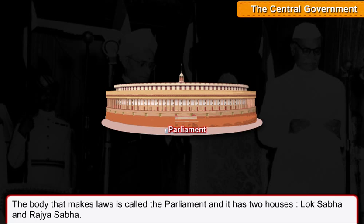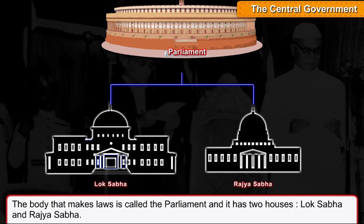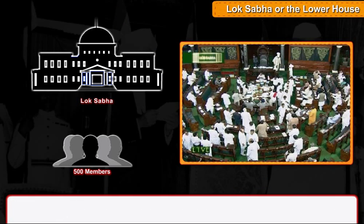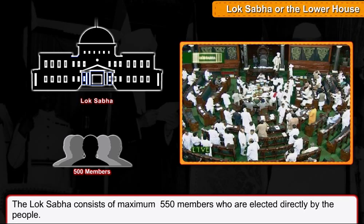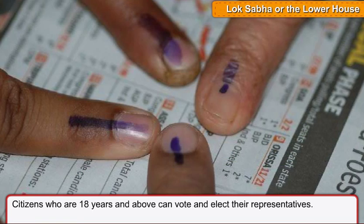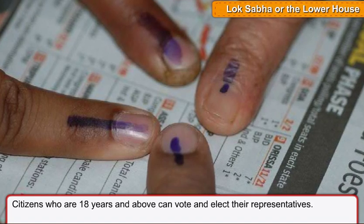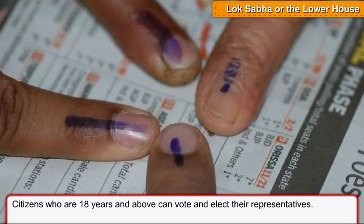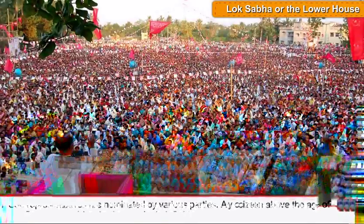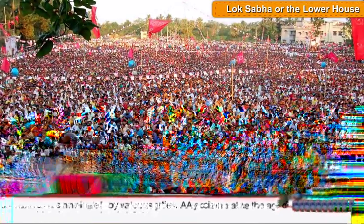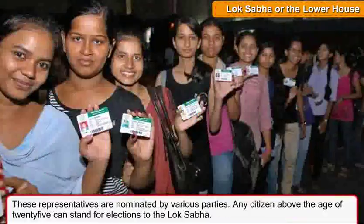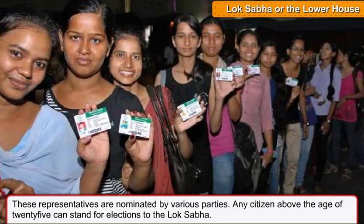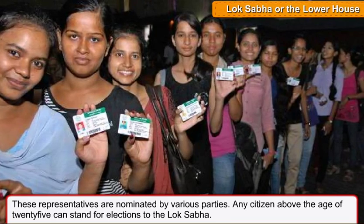The body that makes laws is called the Parliament, and it has two houses — Lok Sabha and Rajya Sabha. The Lok Sabha consists of a maximum of 550 members who are elected directly by the people. Citizens who are 18 years and above can vote and elect their representatives. These representatives are nominated by various parties. Any citizen above the age of 25 can stand for elections to the Lok Sabha.